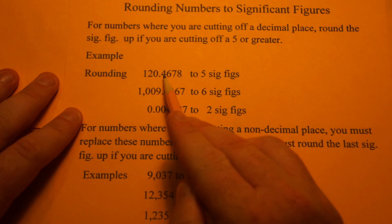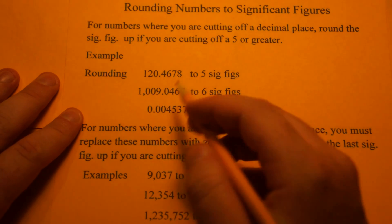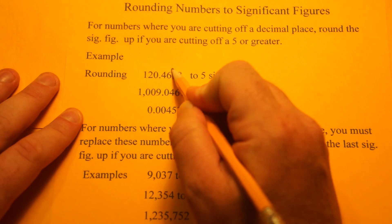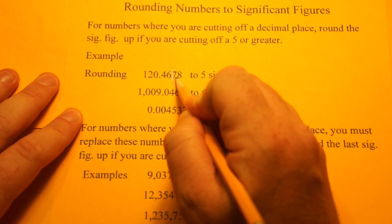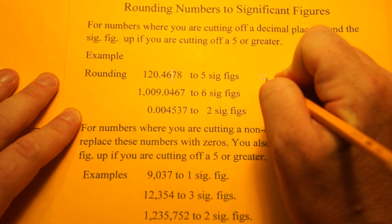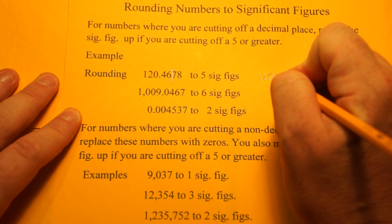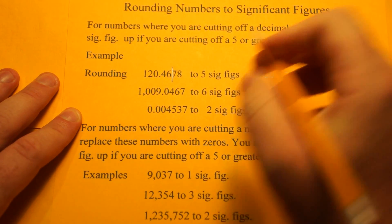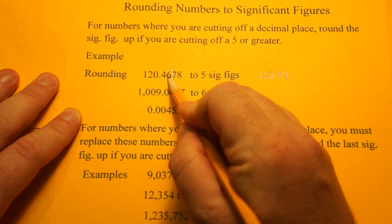120.4678. So the 5 sig figs falls right here. So we're going to cut off the 7. So what we're going to write is 120.47. Because the 7 is greater than 5, we're going to bring this number up.